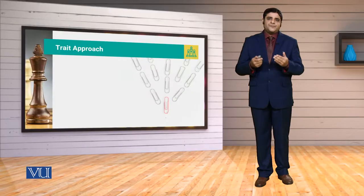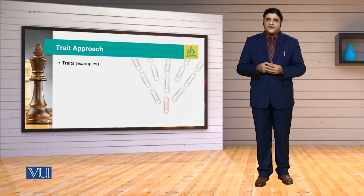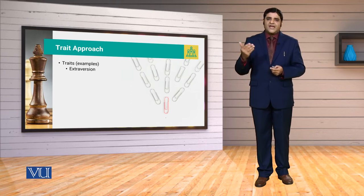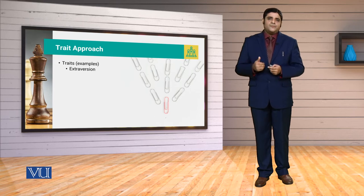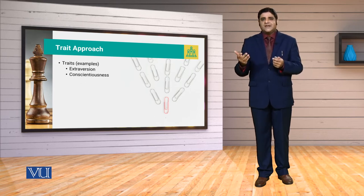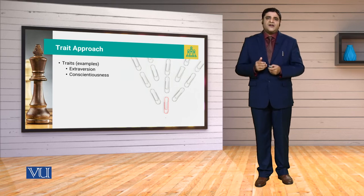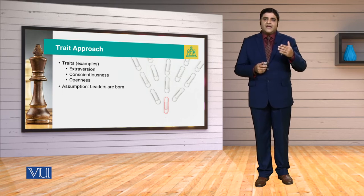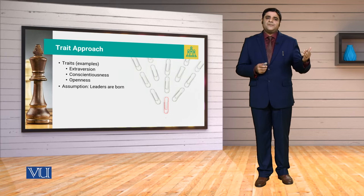Agar hum trait approach ko ek step aage le kar chalein, to traits ki examples jaise number one, they can be extraversion aspects jis mein aap ki personality outgoing and extrovert hai. It can be conscientiousness, jis mein aap shauri se har faislay ko karte ho, logic and reasoning ke saath baat karte ho. That can be openness to experience, and obviously there are so many other traits that can be counted.